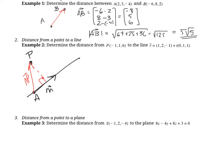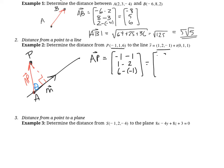To find the distance, if we look at this as a right angle triangle, we can find the length of AP, and if we know the angle between AP and M, we can use sine to find the opposite side of the triangle — that perpendicular distance. So we find vector AP by subtracting the two points: P minus A gives negative 1 minus 1, 1 minus 2, and 6 minus negative 1, which comes out to negative 2, negative 1, and 7.